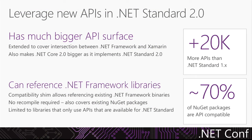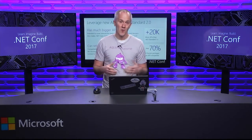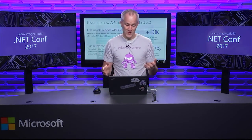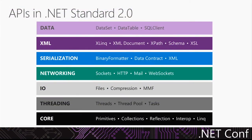.NET Core 2.0 supports all of .NET Standard 2.0. For your ASP.NET Core apps, that means you get to use all those APIs — all the new data APIs, XML, serialization, networking — they're all there ready for you to use. You can also continue to use your existing .NET Framework assets.